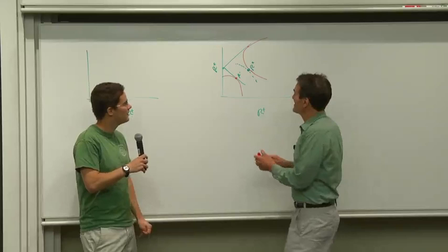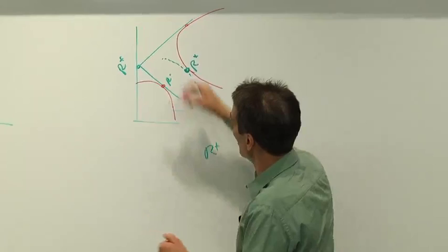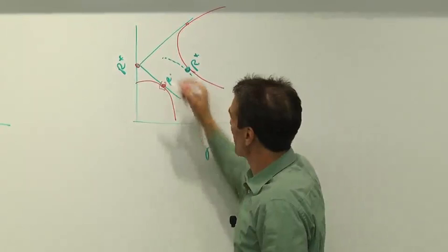Right. Second moment is not the same thing as variance. So R-star is the minimum second moment portfolio. The minimum variance portfolio in this case is, of course, RF itself. Its variance is zero.